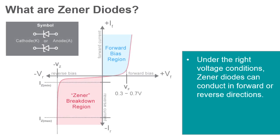A Zener diode is similar to a normal diode in the way that it allows current to flow in the forward direction. But the Zener diode also allows current to flow in the reverse direction when the voltage is above a threshold known as the breakdown voltage. Other common names for breakdown voltage are Zener knee voltage, Zener voltage, avalanche point, or peak inverse voltage.